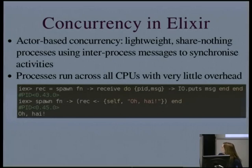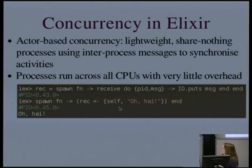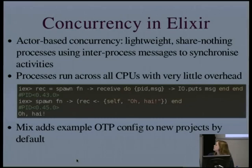Elixir uses the actor model of concurrency. An actor is an independent process that doesn't share anything with other processes, but you can communicate between them by sending messages to synchronise activities. Elixir uses the process support in Erlang — these processes are very lightweight, running across all CPUs with very little overhead, so you can have hundreds of thousands of processes on a very modest machine without any trouble. The send operator is the arrow, and receive will wait for a message. Mix, the Elixir build tool, adds some OTP config to new projects by default, which breaks down some of those barriers to getting started.